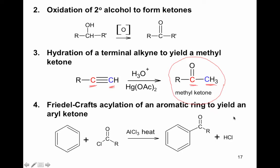The fourth reaction is Friedel-Crafts acylation of an aromatic ring to yield an aryl ketone—the same reaction we saw in the benzene section; nothing has changed. Of the four synthesis reactions, three have already been covered: reactions one and two in the alcohol section and reaction four in the benzene section. The only new reaction is reaction three, the terminal alkyne hydration.